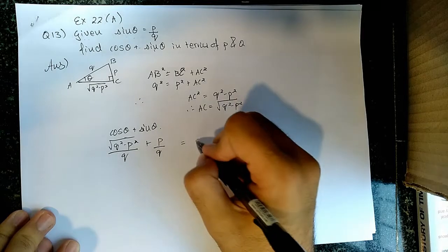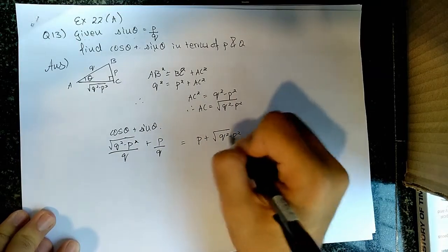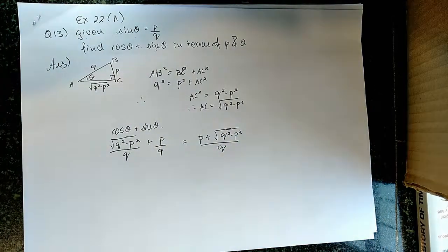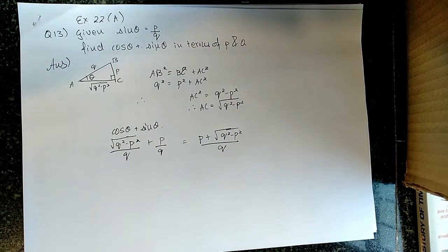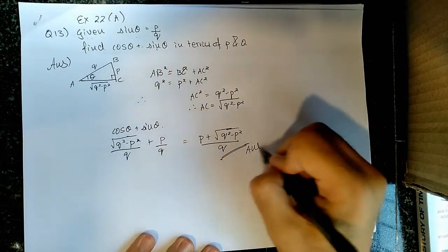Adding these two, we get p plus root of q square minus p square upon q, which is the required answer.